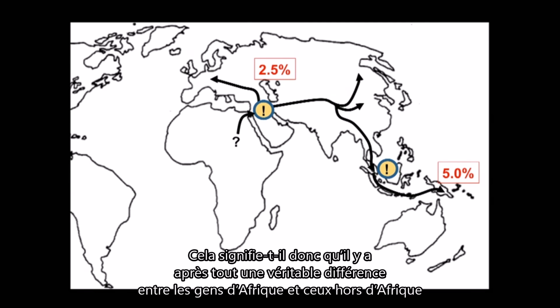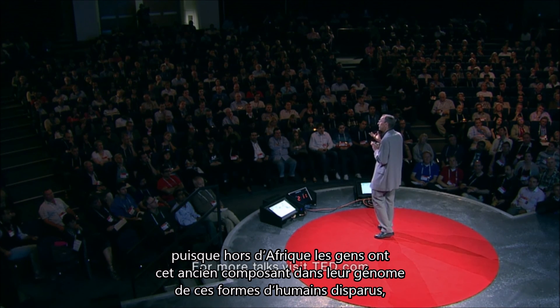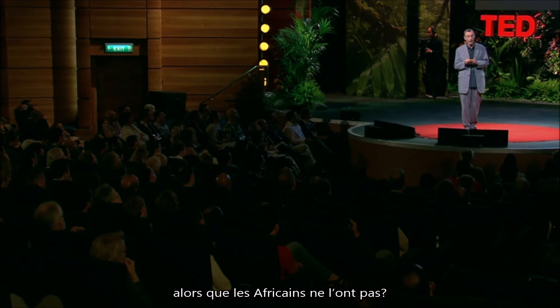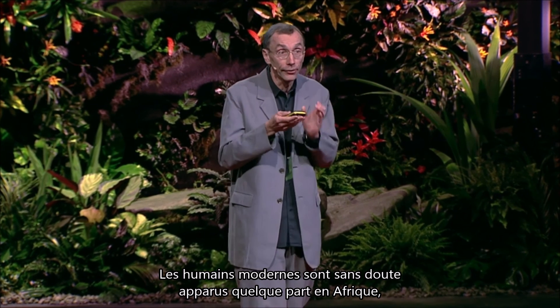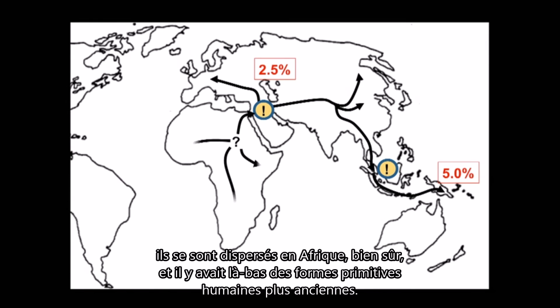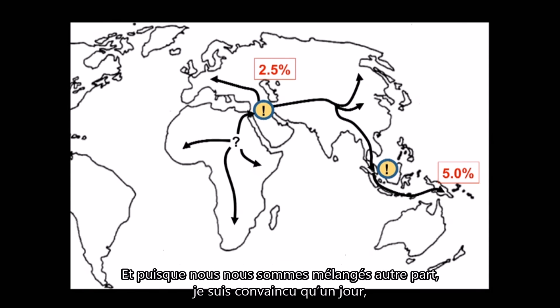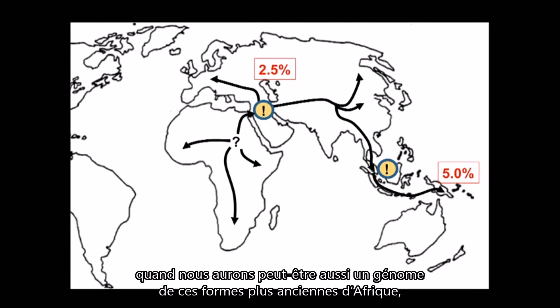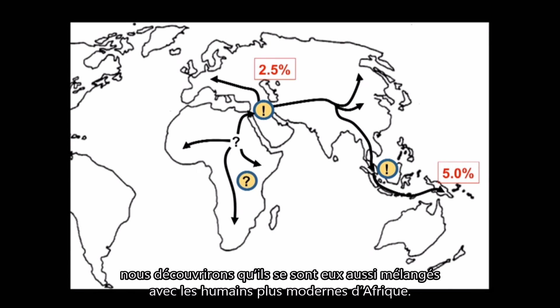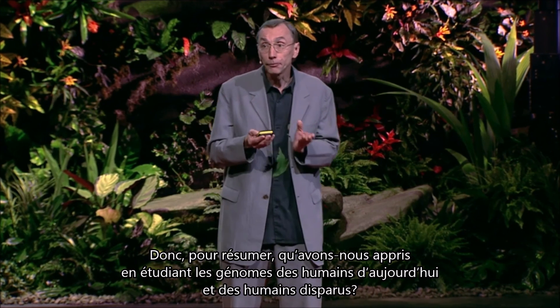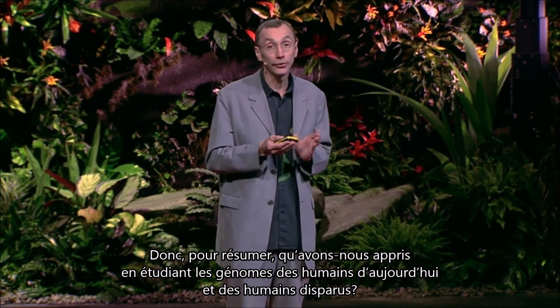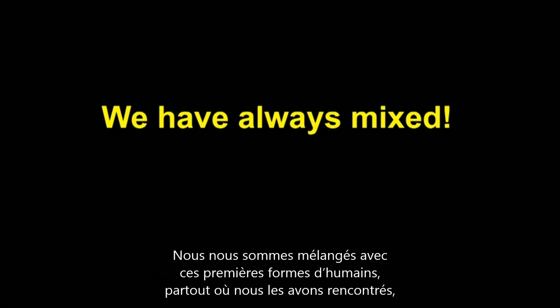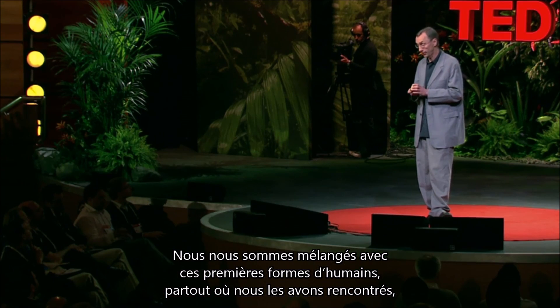Does this mean there is after all some absolute difference between people outside Africa and inside Africa — in that people outside Africa have this old component from extinct forms of humans, whereas Africans do not? I don't think that is the case. Presumably modern humans emerged in Africa, spread across Africa, and there were older earlier forms of humans there. Since we mixed elsewhere, I'm pretty sure that one day, when we have genomes of these earlier African forms, we will find that they also mixed with early modern humans in Africa. To sum up: from studying genomes of present-day and extinct humans, I think the lesson is that we have always mixed — we mixed with earlier forms of humans wherever we met them, and we've mixed with each other ever since.